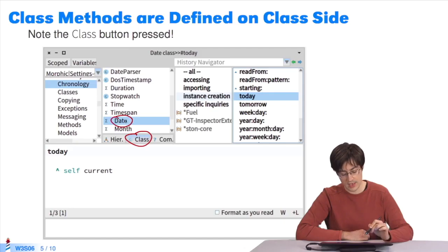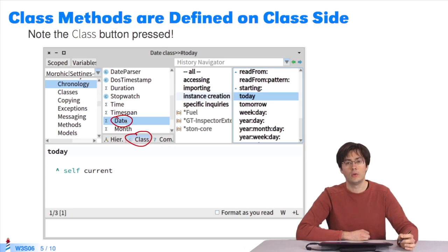How do you implement a class method? You select the class and click on the button class to say you want to implement a method on the class side and not on the instance side, and you implement a method like usual. So the method today is implemented on the class side, in the class date.